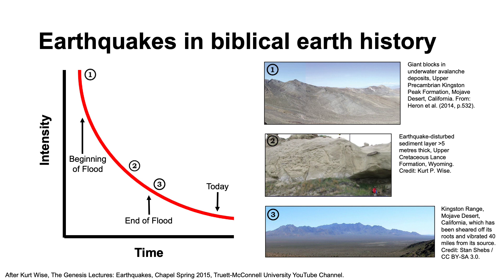Probably the largest earthquakes ever to occur in the history of the Earth were those associated with the breaking up of the fountains of the Great Deep at the beginning of the flood, recorded in Genesis chapter 7 verse 11. Kurt Wise and Steve Austin have studied some upper pre-Cambrian sediments called diamictites, which contain gigantic boulders or megaclasts and which they interpreted as the product of enormous underwater avalanches. These diamictites are worldwide in distribution and when mapped out seem to occur around the margins of the pre-flood supercontinent. In the flood model, these catastrophic avalanches were triggered by supersized earthquakes associated with the breaking up of the Earth's crust at the very beginning of the flood.